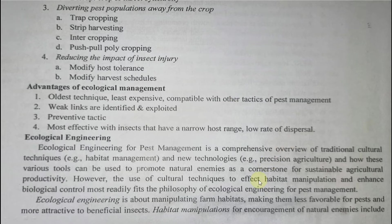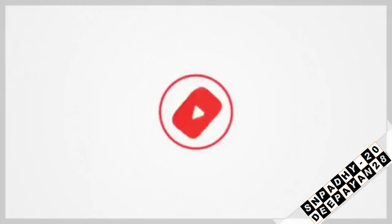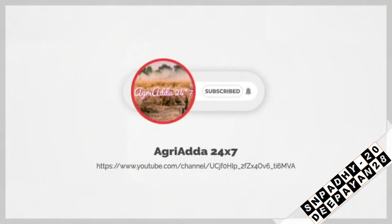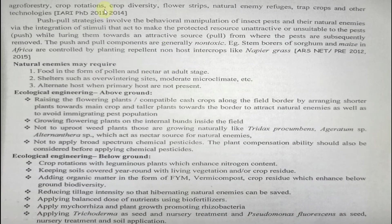Ecological engineering is about manipulating the farm habitat — making it less favorable for pests and more attractive for beneficial insects, favorable for natural enemies. Habitat manipulation for the encouragement of natural enemies includes agroforestry, crop protection using castor plantations, crop diversity, flower strips, natural enemy refuges, trap crops, and other technologies.